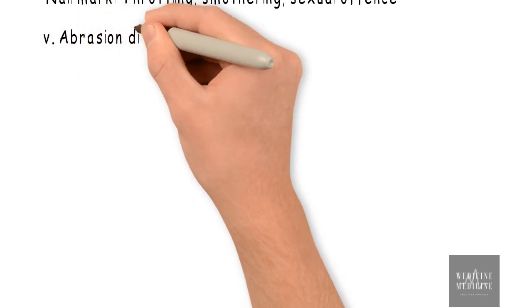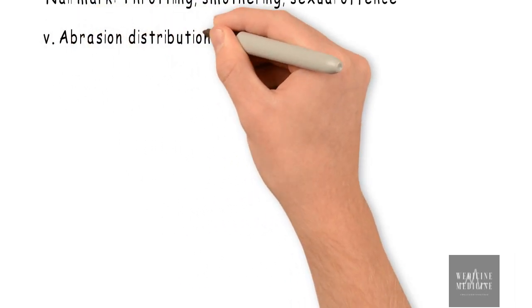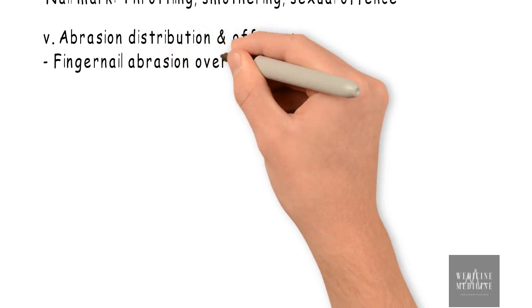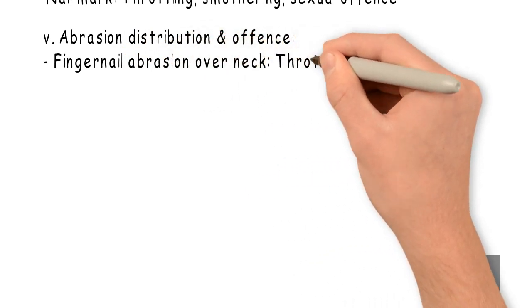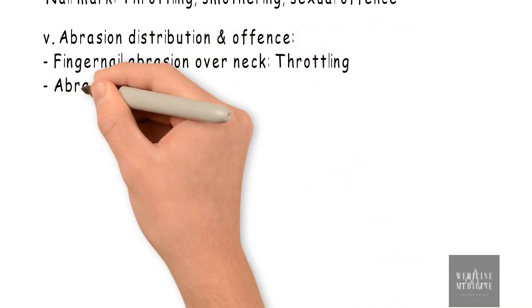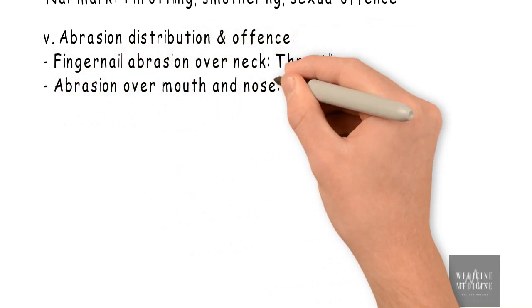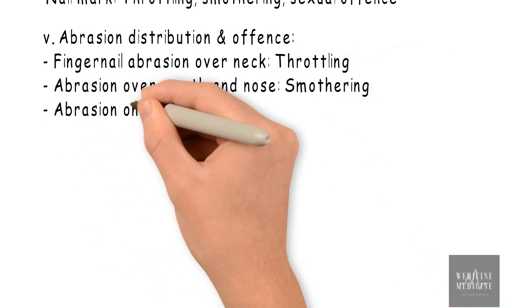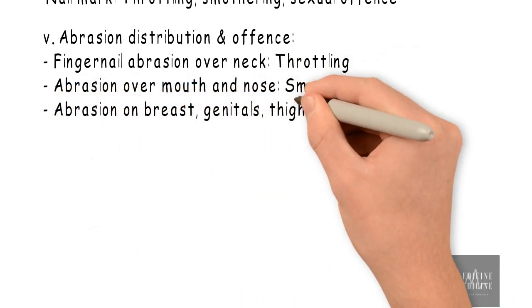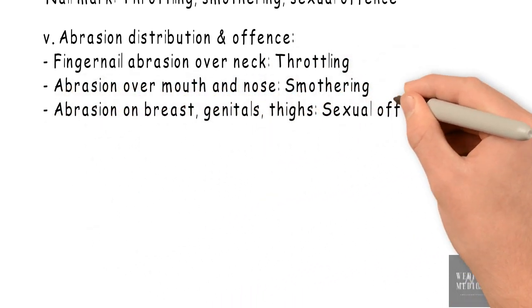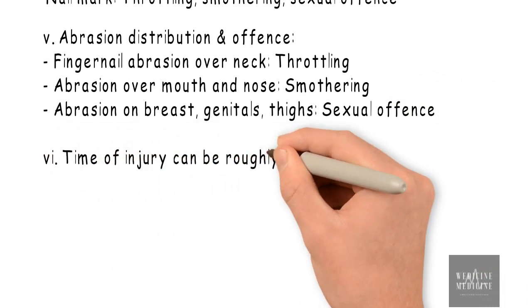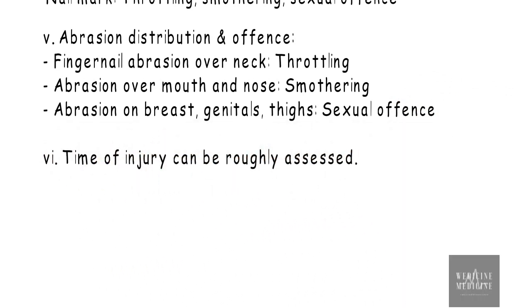Abrasion distribution can explain the offense caused: fingernail abrasion over the neck explains throttling, abrasion over the mouth and nose explains smothering, and abrasion on the breasts, genitals, and thighs of a female explains sexual offense. Also, the time of injury can be roughly assessed through abrasion.